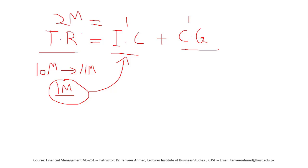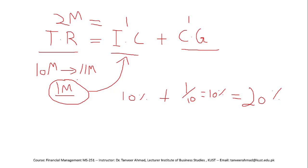Your total return is 2 million. Converting to percentages: the capital gain is 1 million divided by 10 million, which is 10%, and the income component is also 10%, so total return is 20%. For a bond, the income component is the interest and the capital gain is the change in price of the bond, so total return equals income return plus return from the change in price.